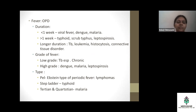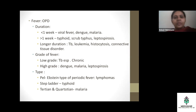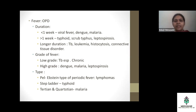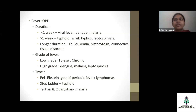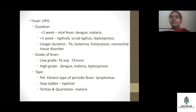Now discussing fever characteristics using onset, progression, and duration. When duration is less than one week, think infectious disease like viral fever, dengue, and malaria. More than one week suggests scrub typhus and leptospirosis, which are notorious for longer periods. Duration more than two to three weeks going into months suggests chronic disease: tuberculosis, leukemia, histiocytosis, or connective tissue disorder, depending on age.